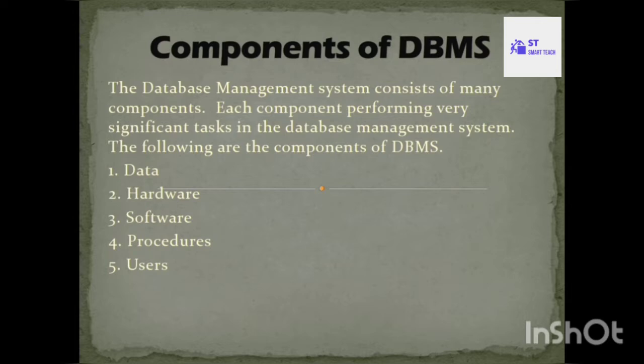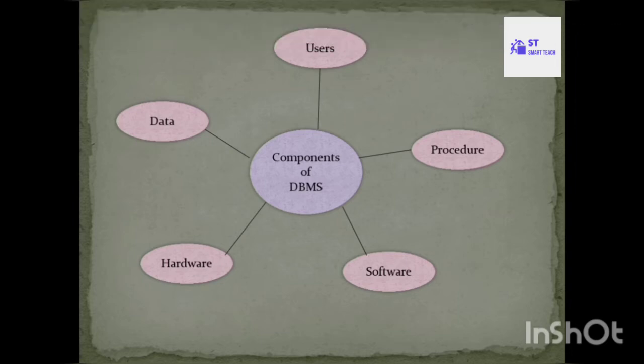Each component in DBMS performs a very significant task. DBMS has a total of five types of components. Those are: data, hardware, software, procedure, and users. Each component performs certain operations and tasks.